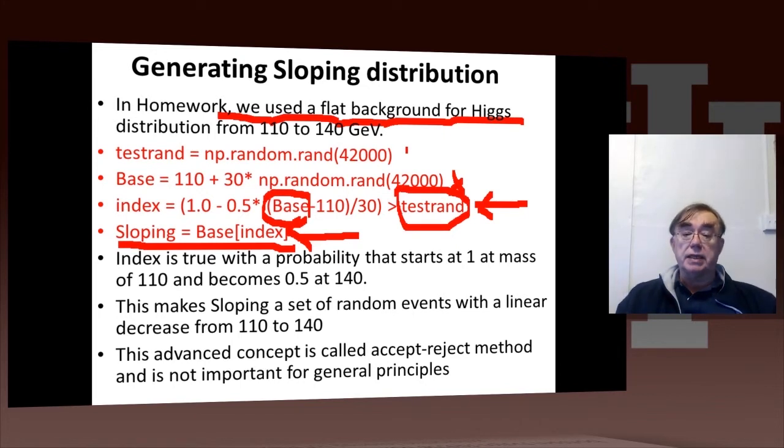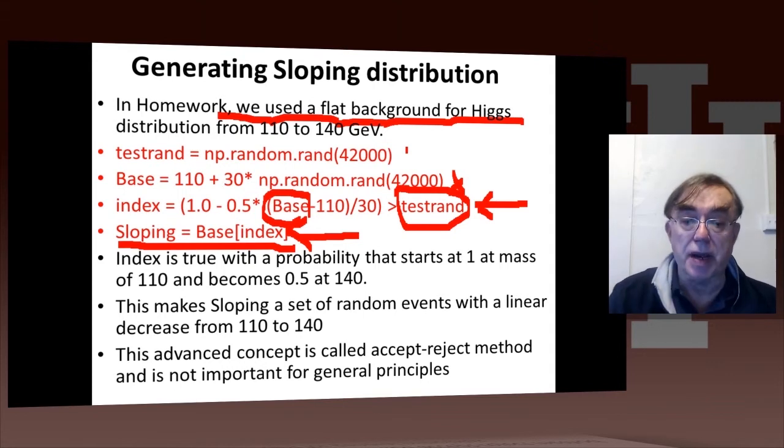And we calculate index, and index is only true if this function is bigger than a random number. And then we take all those true indices and put them into as an index of base, and then we get sloping. So this is the magic of Python.